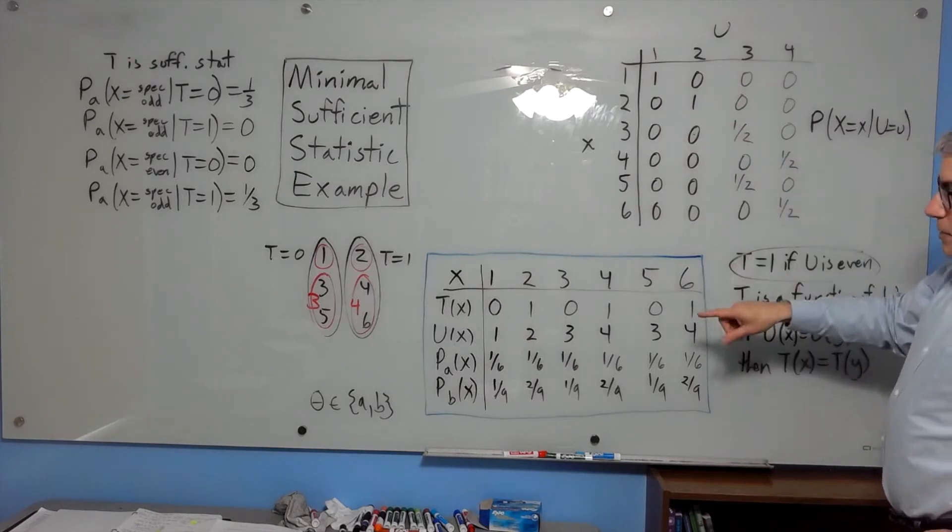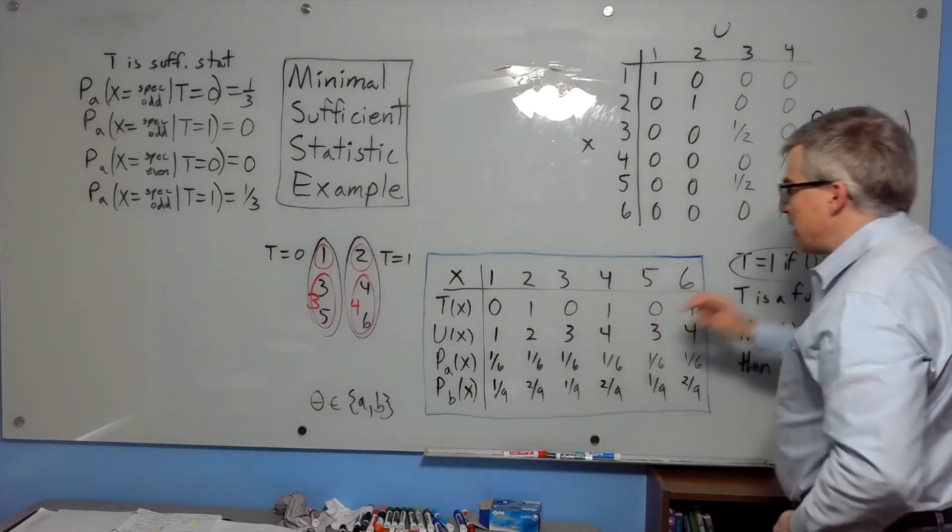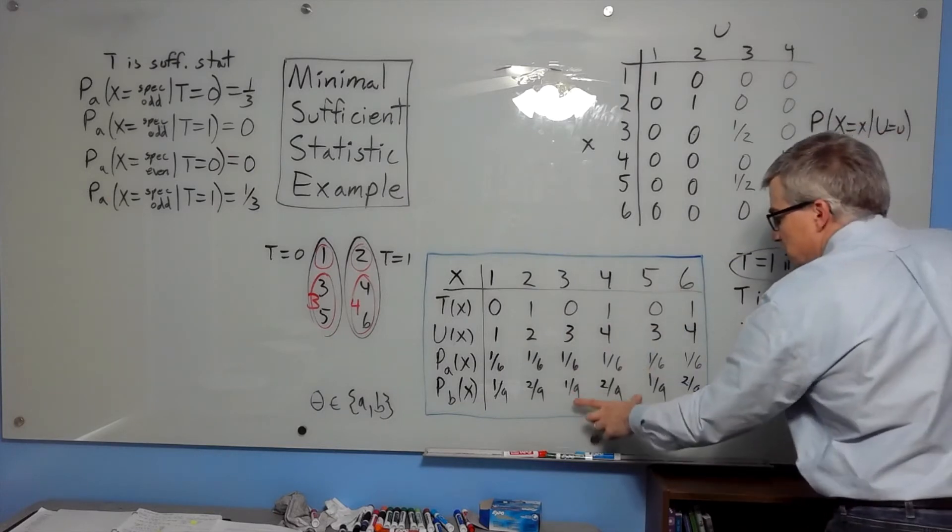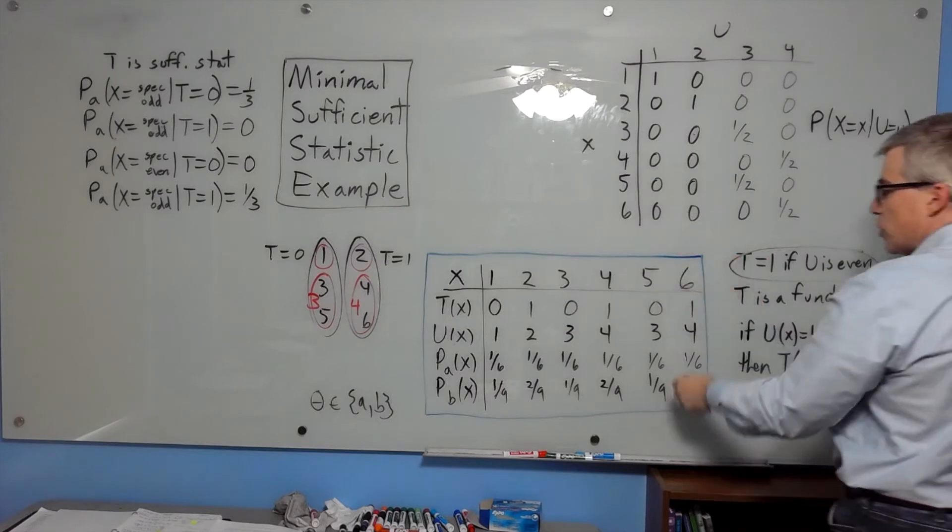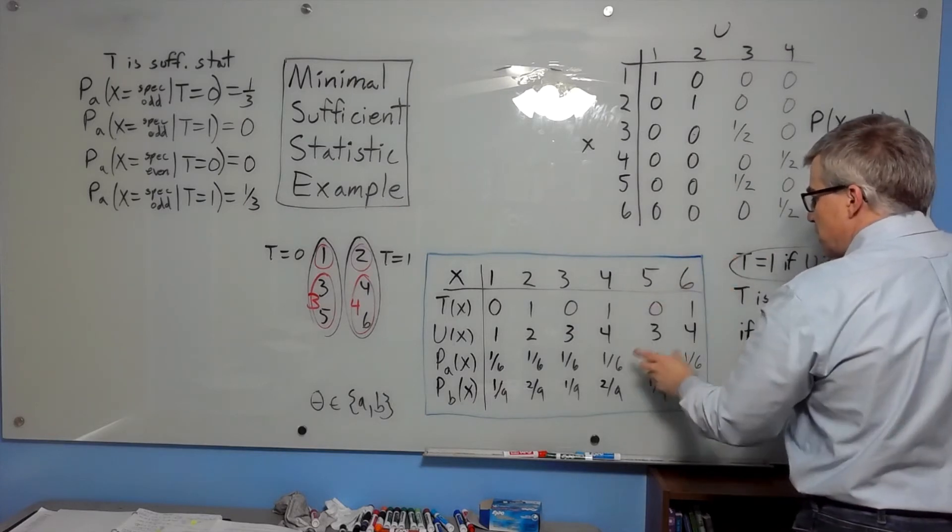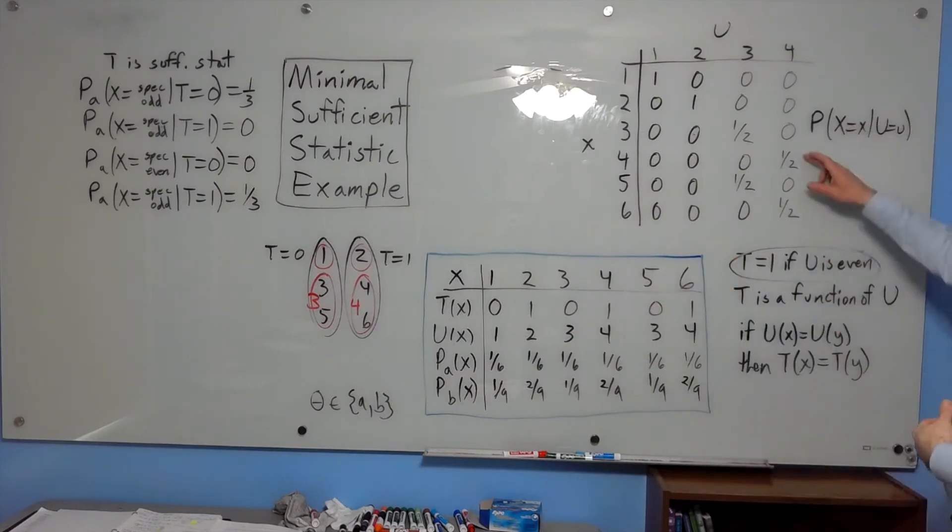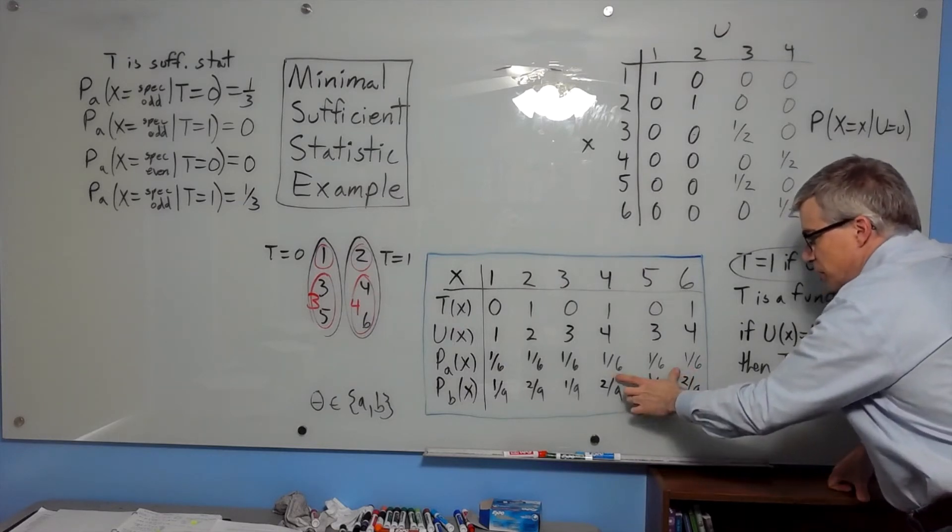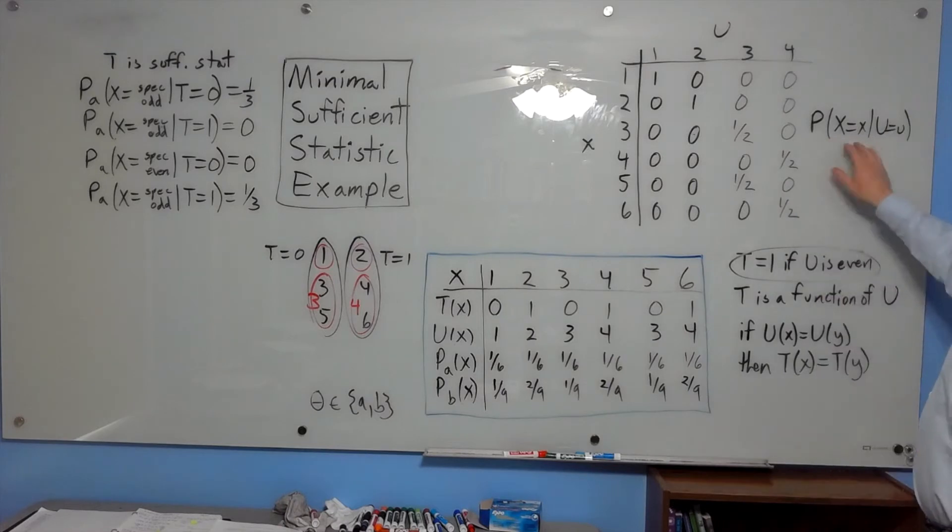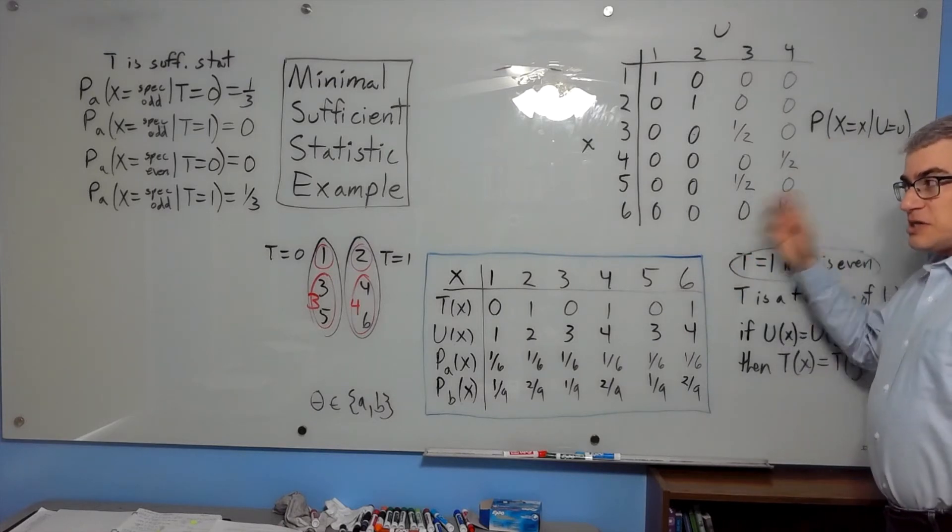If u is 3, that means that x is either 3 or 5, and it's equally likely, so one-half, one-half. And if u is 4, x is 4 or 6, then that's equally likely, one-half, one-half. And that is true whether you look at this distribution or this one. So u is also a sufficient statistic.